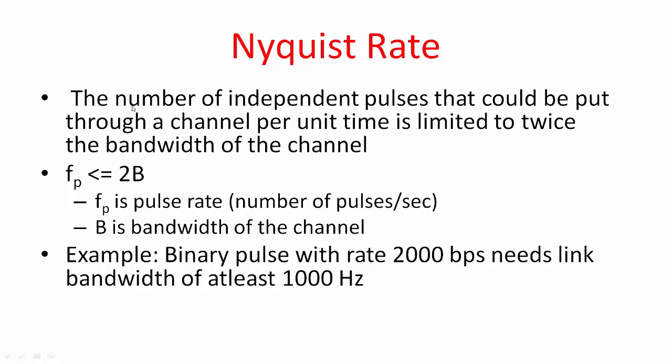He figured out that the number of independent pulses that could be put through a channel per unit time is limited to twice the bandwidth of the channel. So if fp is the pulse rate and B is the channel bandwidth, that is the link bandwidth, this relation has to hold.